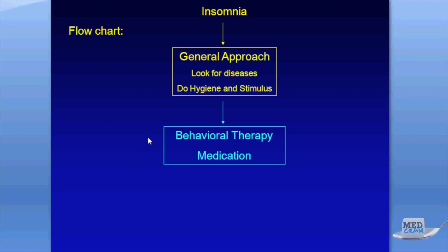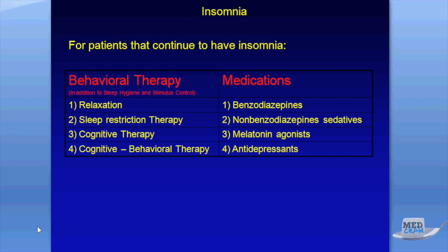Here's another way of looking at it. Our general approach is to look for diseases, do a hygiene handout, and stimulus control. If that doesn't work, we move on to a combination of behavioral therapy and medication. The four different behavioral therapies are: relaxation technique, sleep restriction therapy, cognitive therapy, and cognitive behavioral therapy.